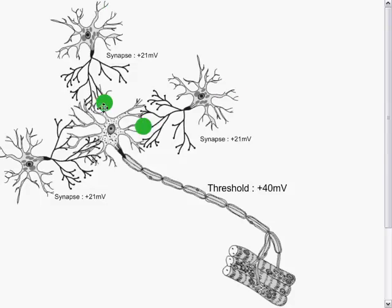At each one of these, we are generating an action potential of plus 21 millivolts. That meets our threshold of plus 40 millivolts, just barely exceeding that threshold. And so these signals then cause a potential to be generated on our motor neuron. A signal then travels down our motor neuron and we have our muscle twitch.